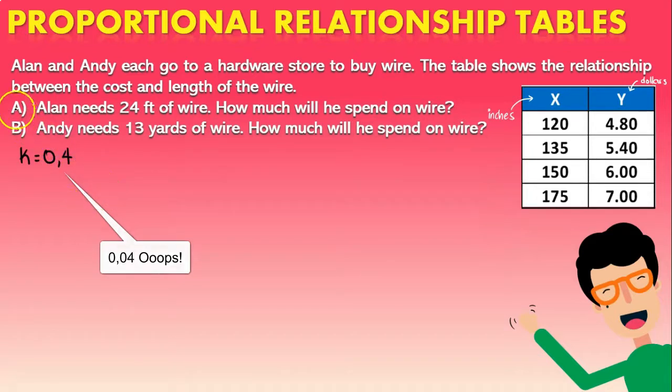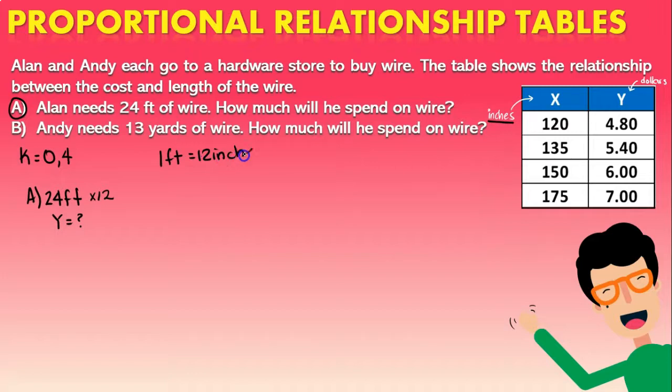Now guys in the first example they're saying that Alan needs 24 feet of wire, how much will he spend on wire? Now they're asking us for the value of y which is going to be the cost, and they're telling us that it's 24 feet of wire. Now the value for x here is in inches, so in order to know the amount of inches we're going to have to multiply by 12, because you have to remember that one foot is going to be 12 inches. So 24 multiplied by 12 is going to give us 288 inches.